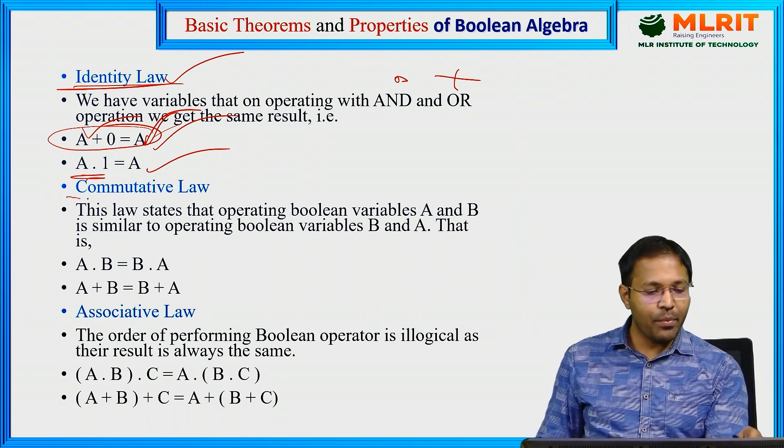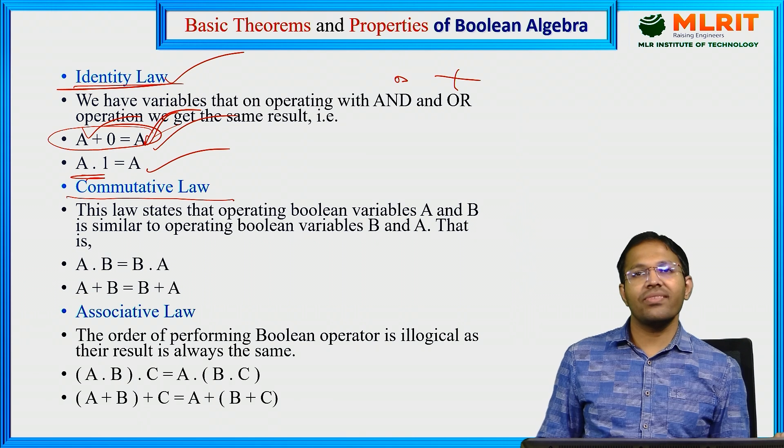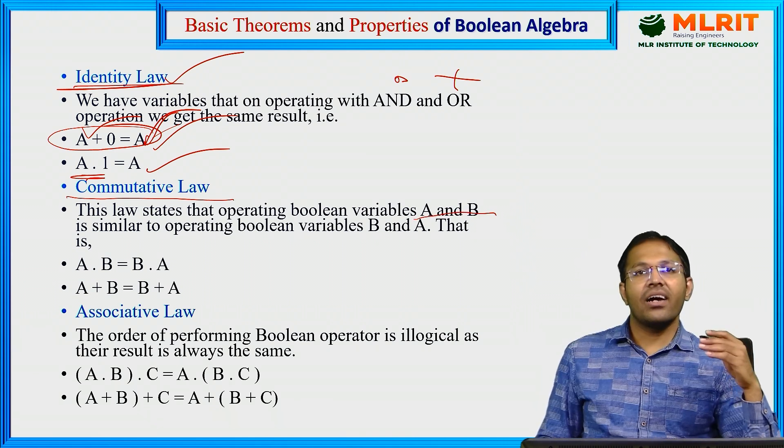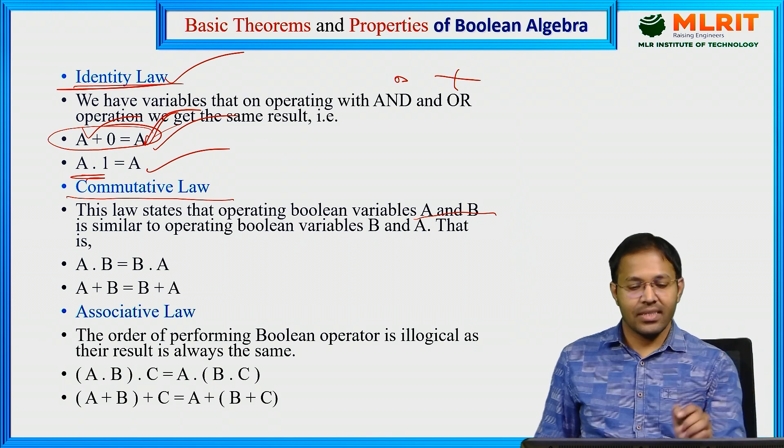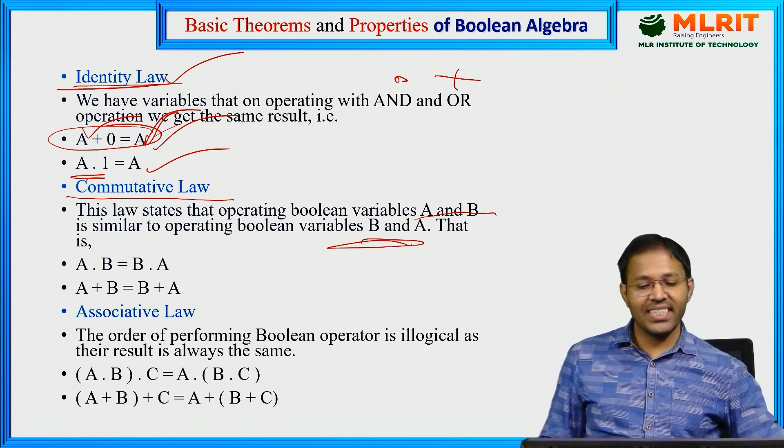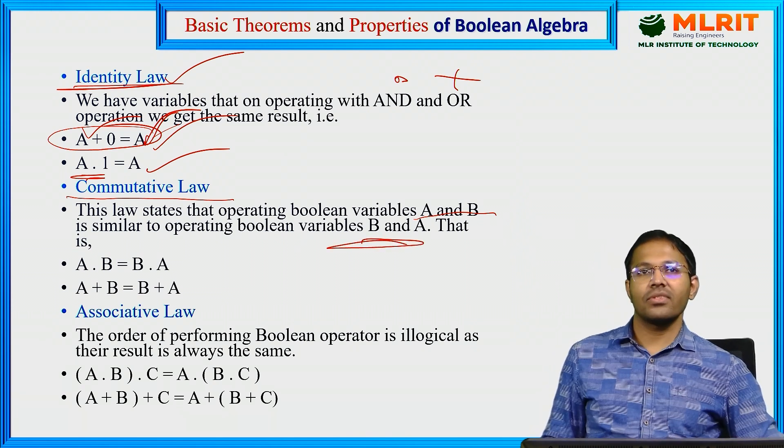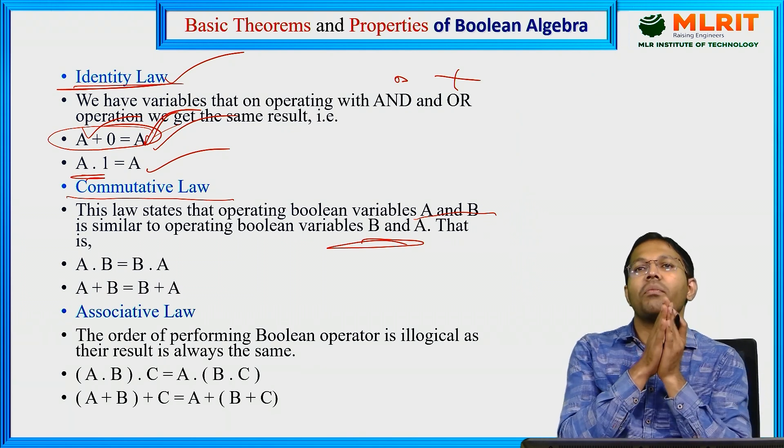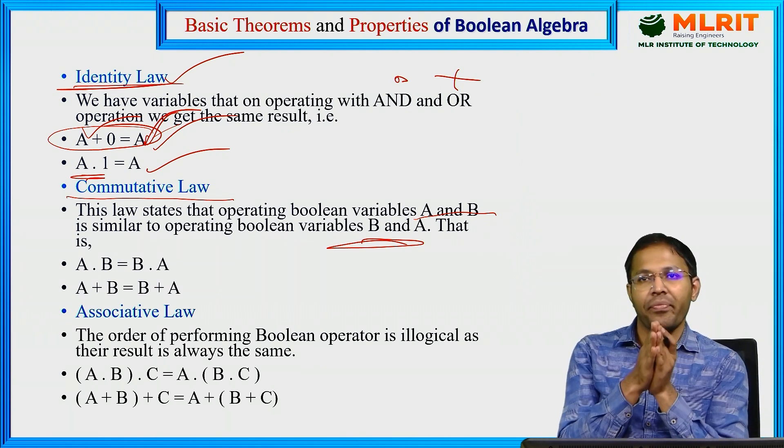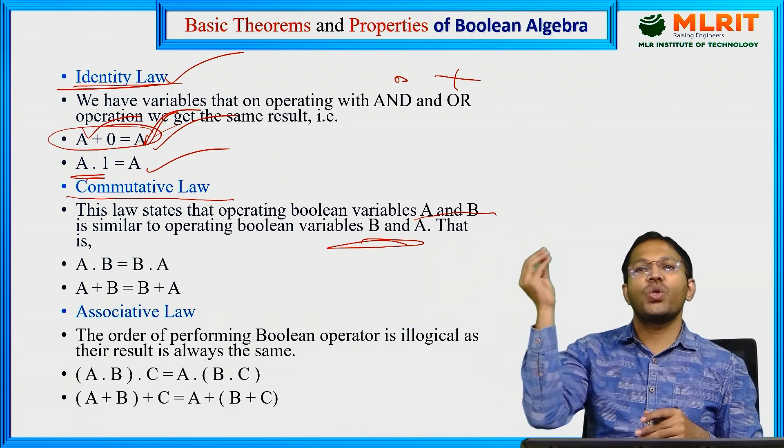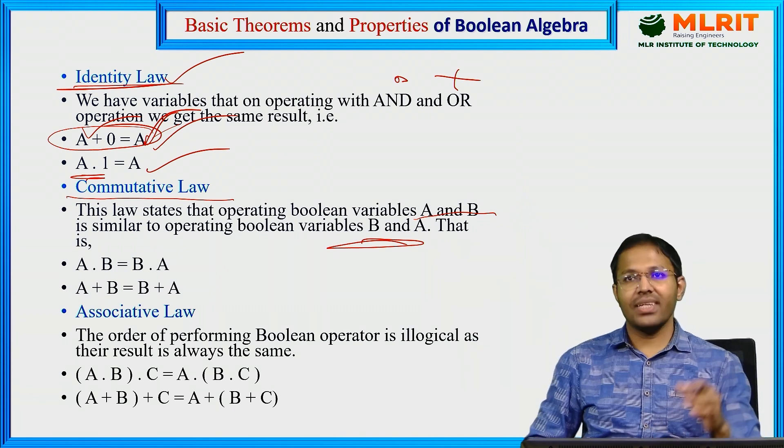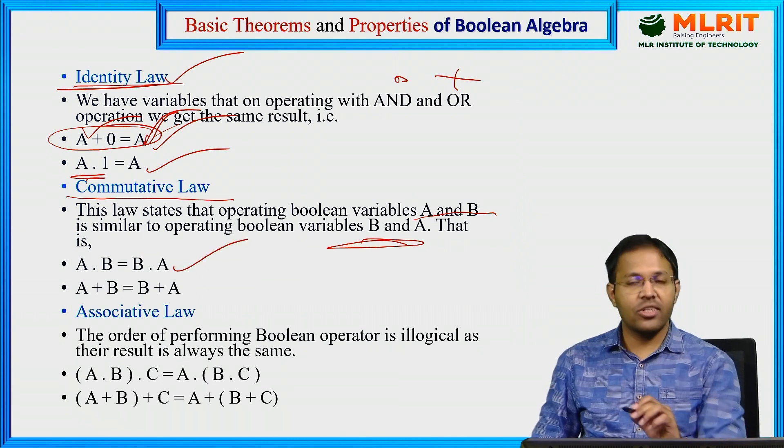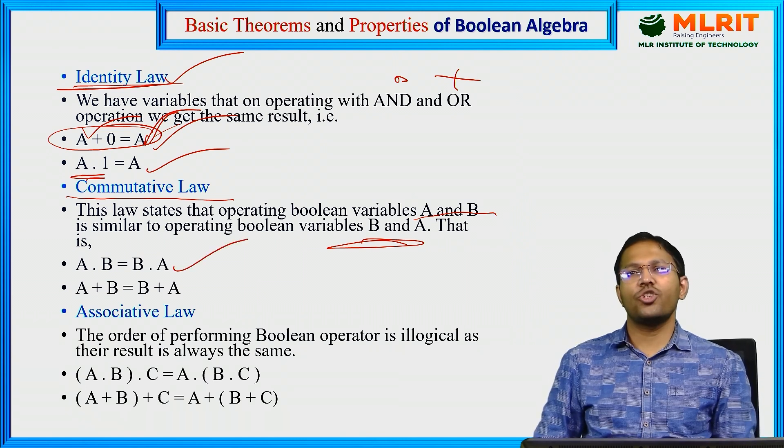Then, Commutative Law. Suppose we have two Boolean variables A and B. If you perform operations by changing the order, that is what commutative law considers. If you perform A into B, if you perform B into A, the result is the same. The same is valid in algebra, regular algebra. A into B equals B into A. 2 into 3 equals 3 into 2, both are 6.